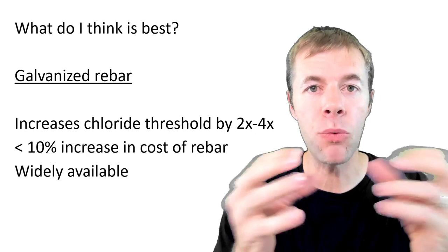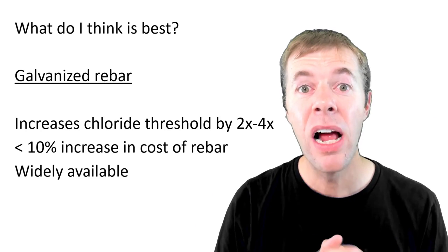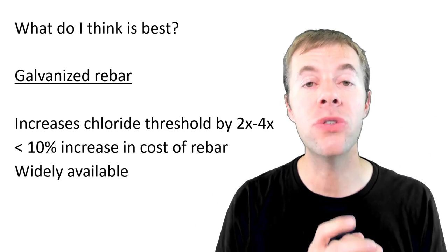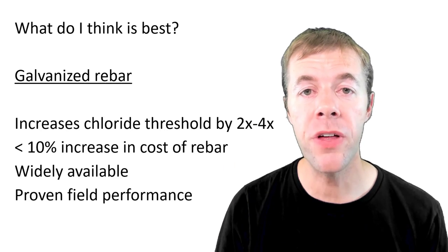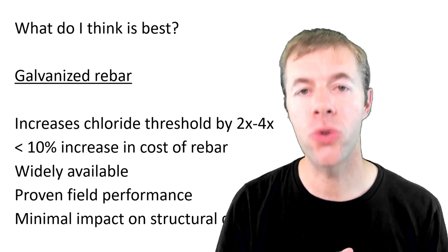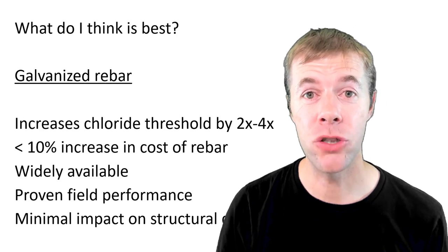And it's widely available. Hot dip galvanizing, taking rebar and dipping it in molten zinc and taking it out, that's a widely used process used in all types of metal treatment. There's proven field performance with it, and there's minimal impact on your structural design. And that's why for me, I think it's the best choice.